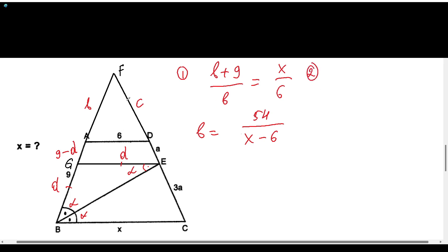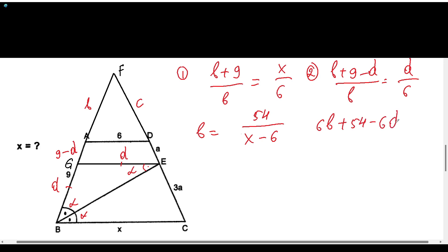The second equation is for the triangles gfe and fad. Here, (b + 9 − d) over b will be equal to b over 6. From this, we can find b in terms of d: 6b + 54 − 6d equals b squared, so b equals (6d − 54) over (6 − d).